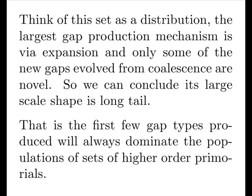Think of this set as a distribution. The largest gap production mechanism is via expansion. Remember the amount undergoing coalescence is order one over our current prime, and only some of the new gaps evolved from coalescence are novel. So we can conclude its large scale shape is long tail. That is, the first few gap types produced will always dominate the populations of sets of higher order primordials.